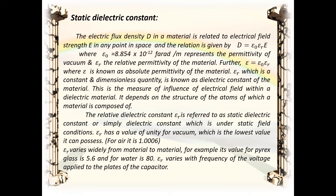The electric flux density D in a material is related to the electric field strength E by D equal to epsilon_0 epsilon_r into E, where epsilon_0 equals 8.854 × 10⁻¹² farads per meter, representing the permittivity of vacuum, and epsilon_r is the relative permittivity of the material. Also, epsilon equal to epsilon_0 into epsilon_r, where epsilon is the absolute permittivity of the material. Epsilon_r, which is a constant and dimensionless quantity, is known as the dielectric constant. It depends on the structure of the atoms of which the material is composed. The relative dielectric constant epsilon_r is referred to as the static dielectric constant, defined under static field conditions.